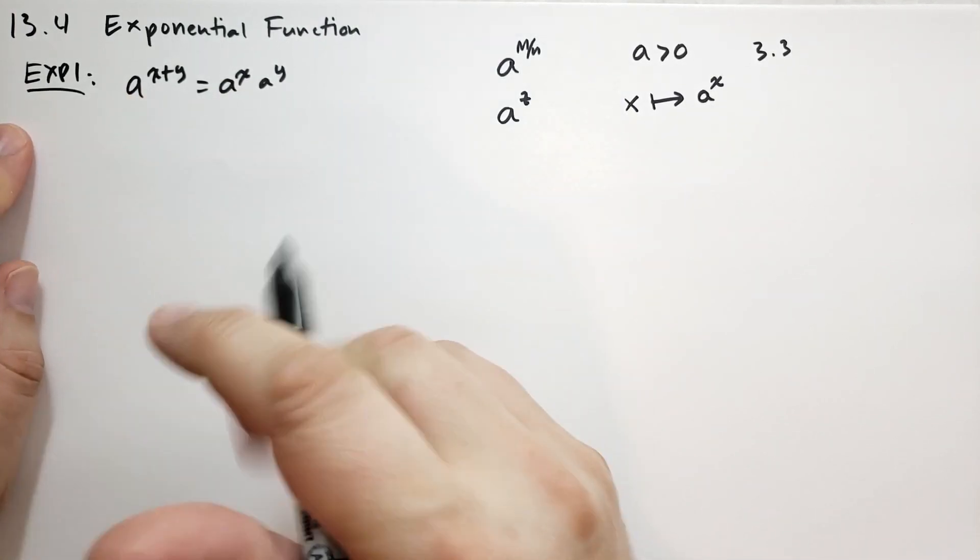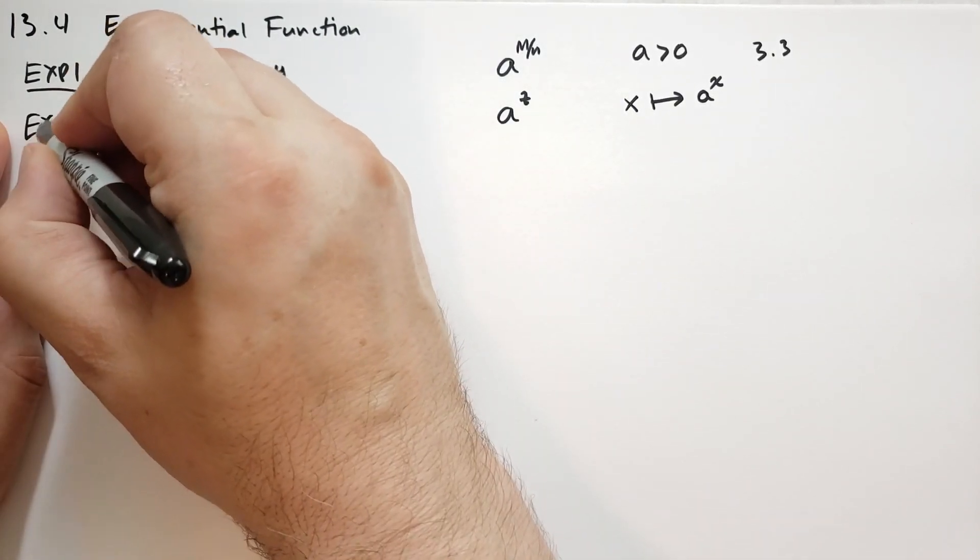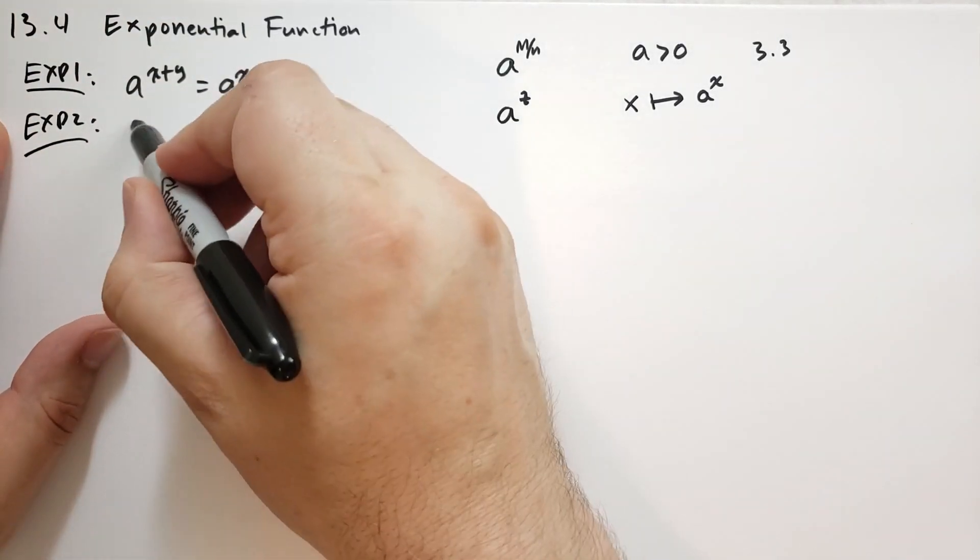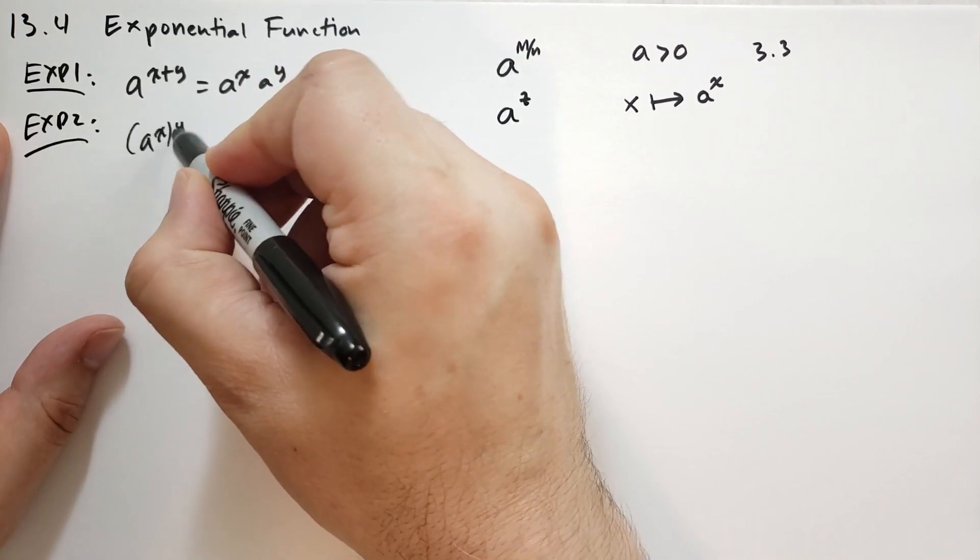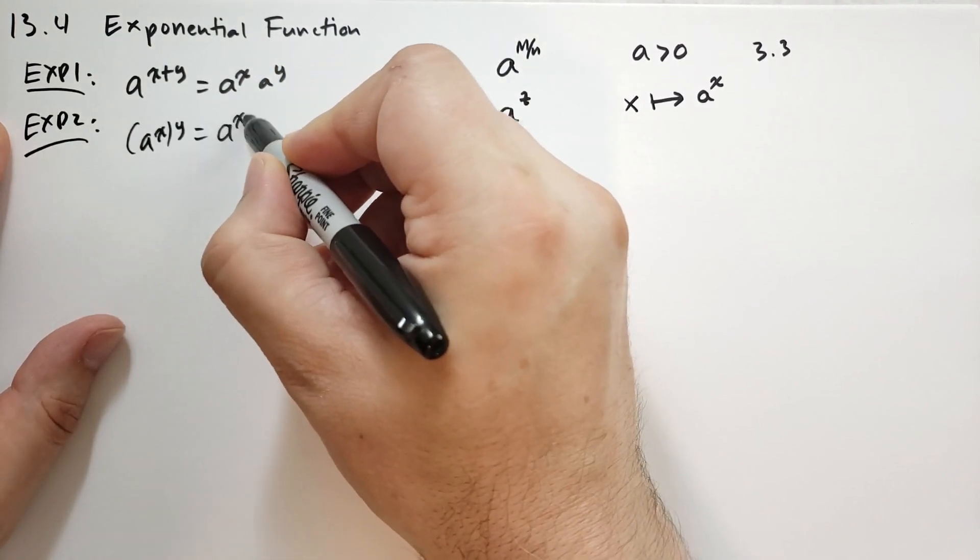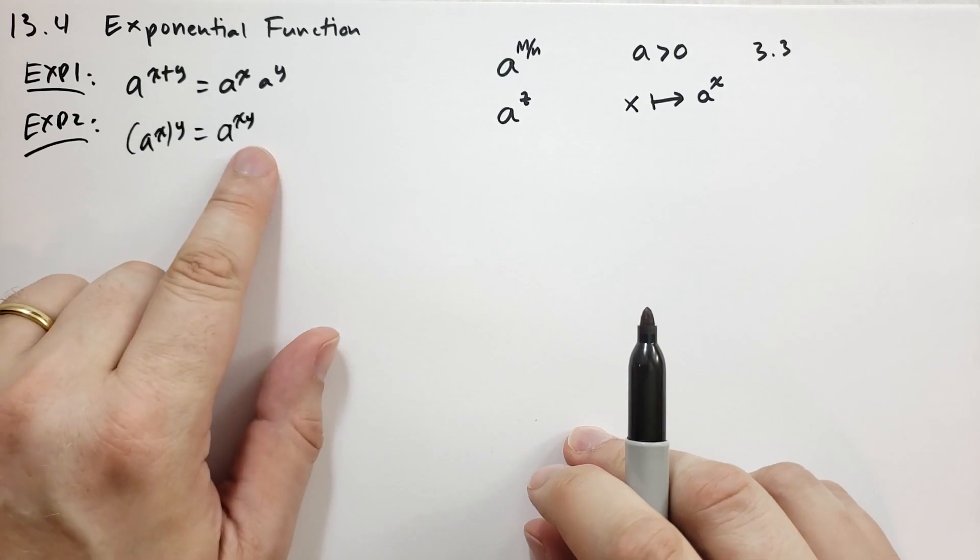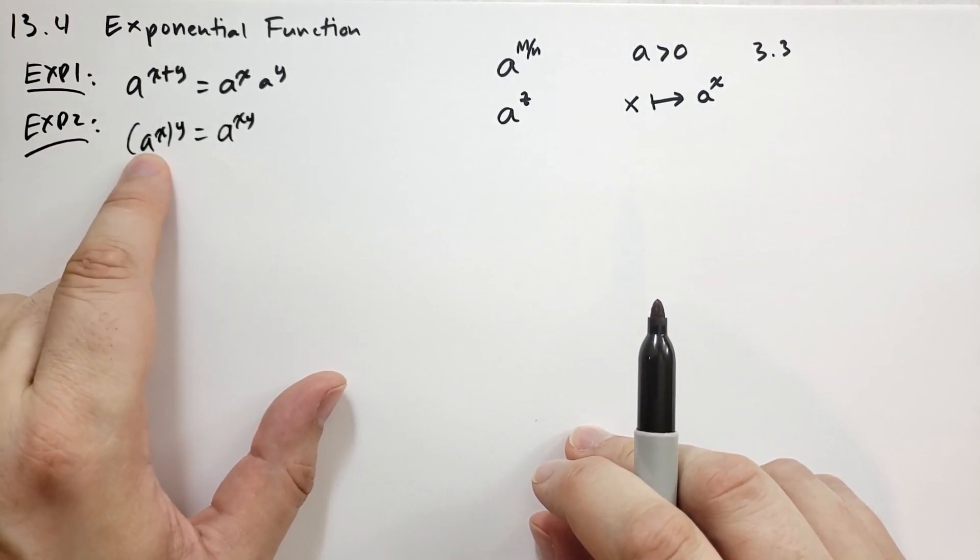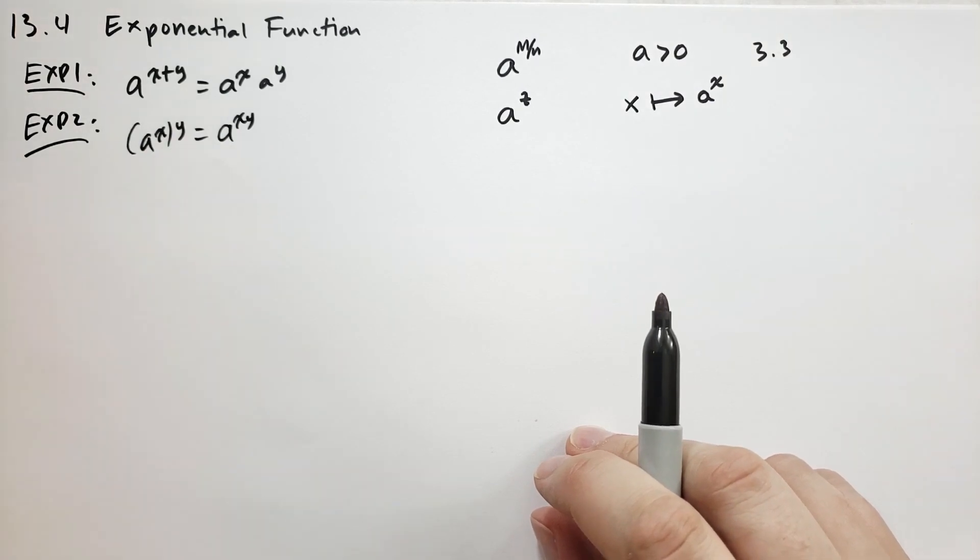Rule EXP2 states that for all numbers x and y, we have (a^x)^y is the same as a^(xy). So multiplying the exponents is the same as taking a to the x, y times.